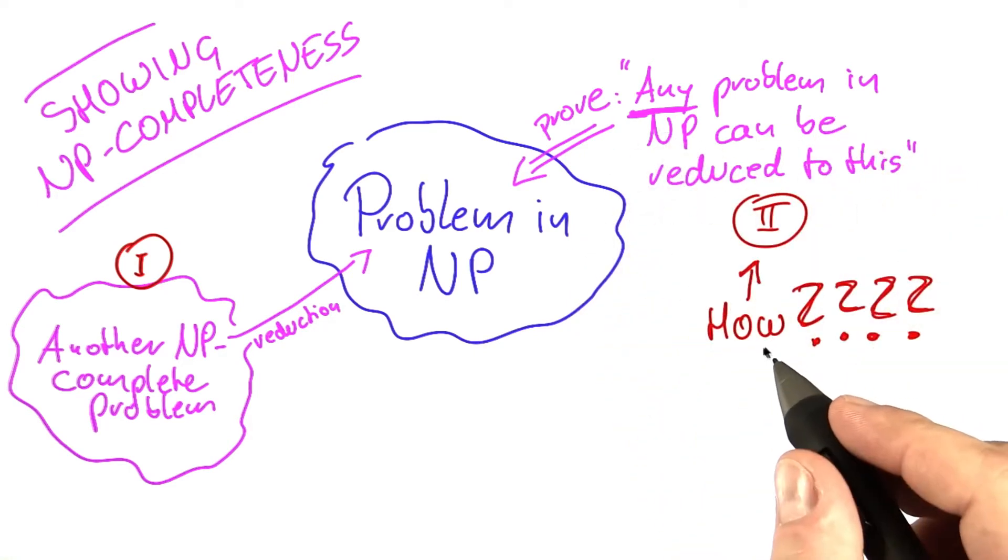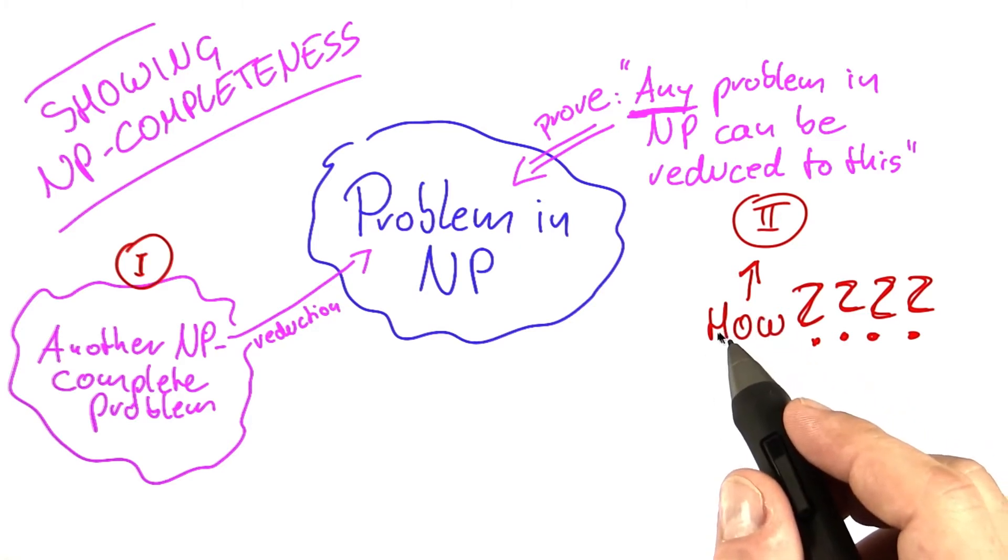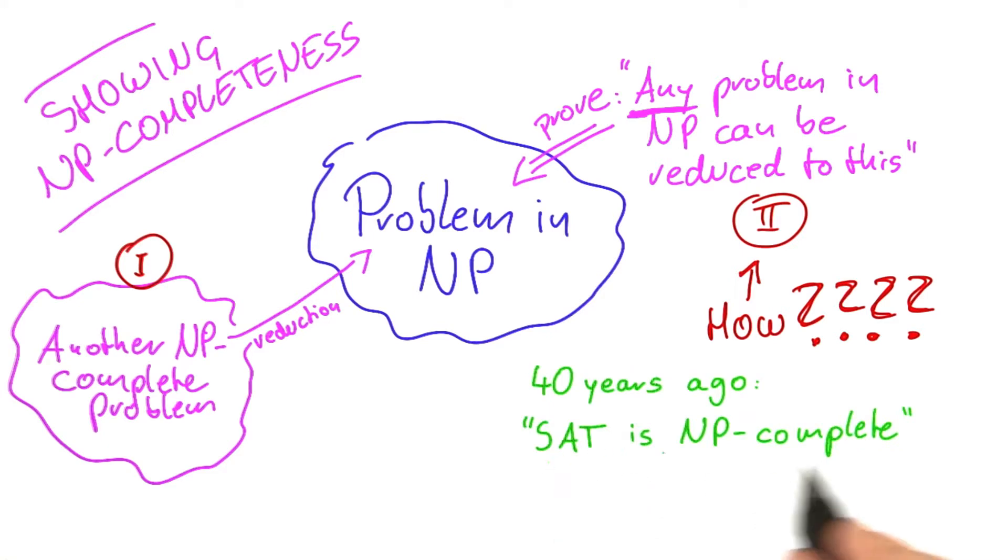Luckily for us, or actually more luckily for me, this work has already been done about 40 years ago by showing a problem called Boolean Satisfiability, or SAT for short, to be NP-complete. And this result is one of the most famous results in theoretical computer science, which is why we're going to investigate it in detail and also investigate the proof together.